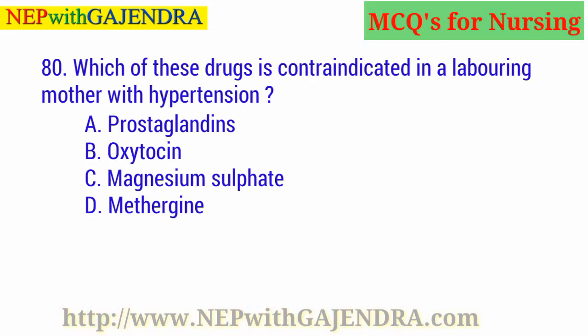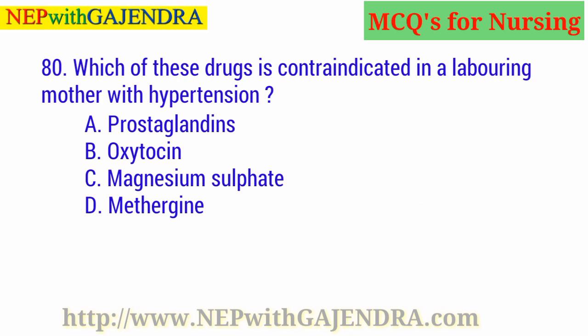Which of these drugs is contraindicated in a laboring mother with hypertension? A. Prostaglandins. B. Oxytocin. C. Magnesium sulfate. D. Methergine. The right answer is D: Methergine.